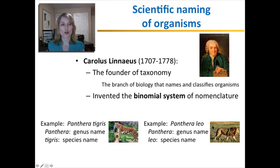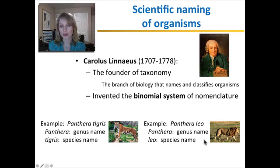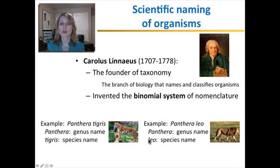The lion is called Panthera leo. A lion and a tiger share a lot of similarities, but they're also different from each other. Because of their similarities, they belong to the same genus, Panthera. But because of their differences, they are considered different species.